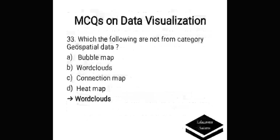Which of the following is not from the category of geospatial data? Options are: A. Bubble map, B. World clouds, C. Connection map, D. Heat map. Correct answer is world cloud. It is not from the category of geospatial data.